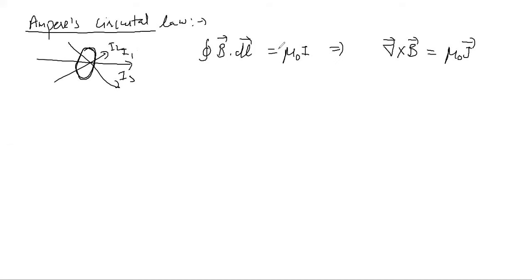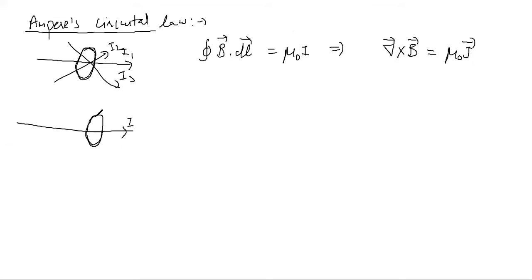The problem with Ampere's Circuital Law is that it only takes into account cases where there is no piling up of charges anywhere. For example, if I have this wire and draw an Amperian loop, for that loop you need to draw a surface and the current has to pierce through that surface. You can draw a surface whose boundary is given by this line, and that gives you the integral equal to mu naught times i.